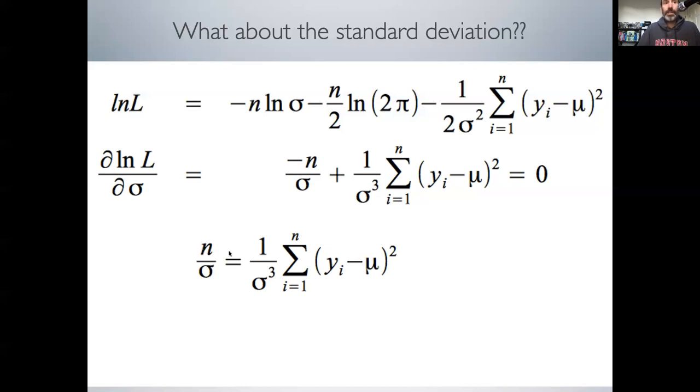Then divide both sides by n, leaving sigma squared equals the sum of squared errors divided by n, which is the mean squared error.